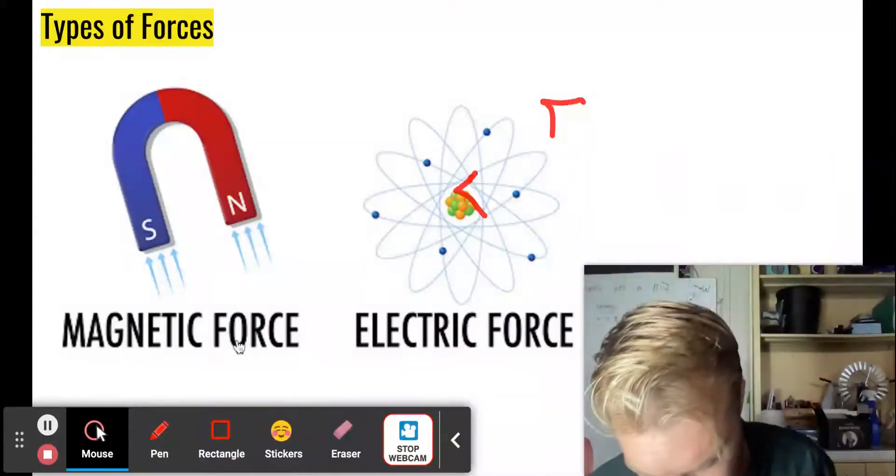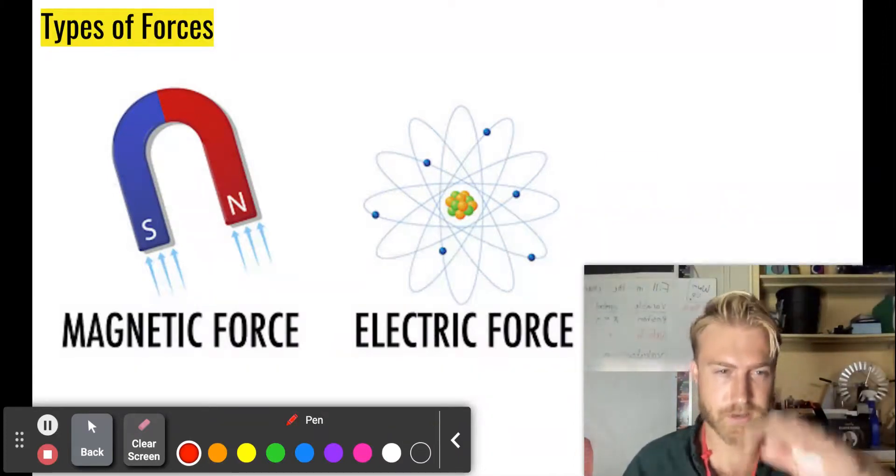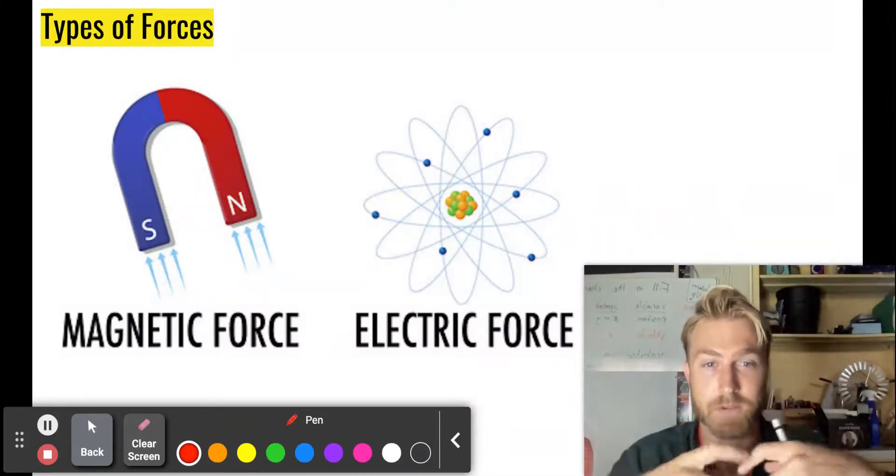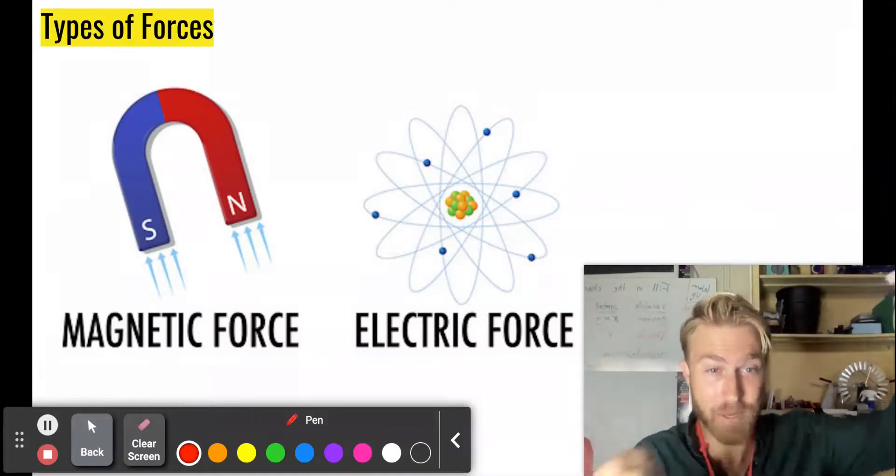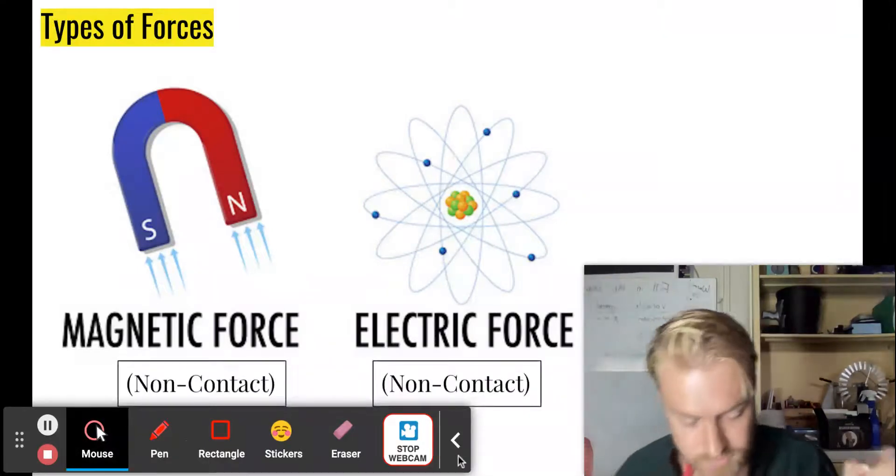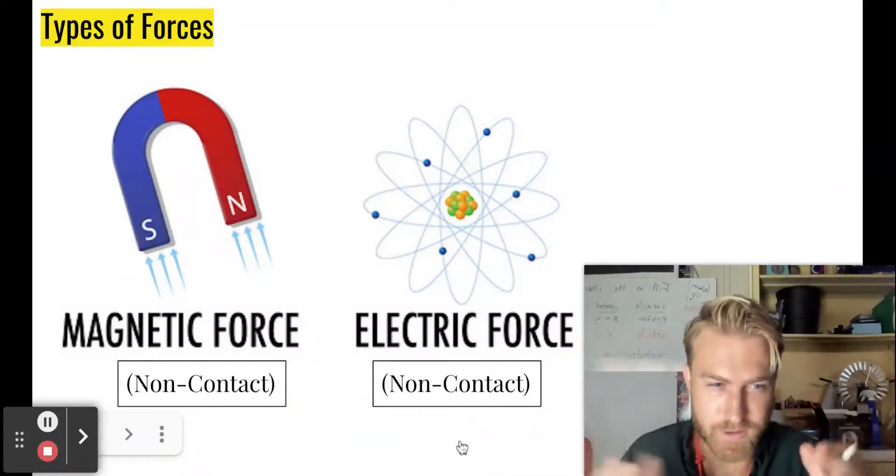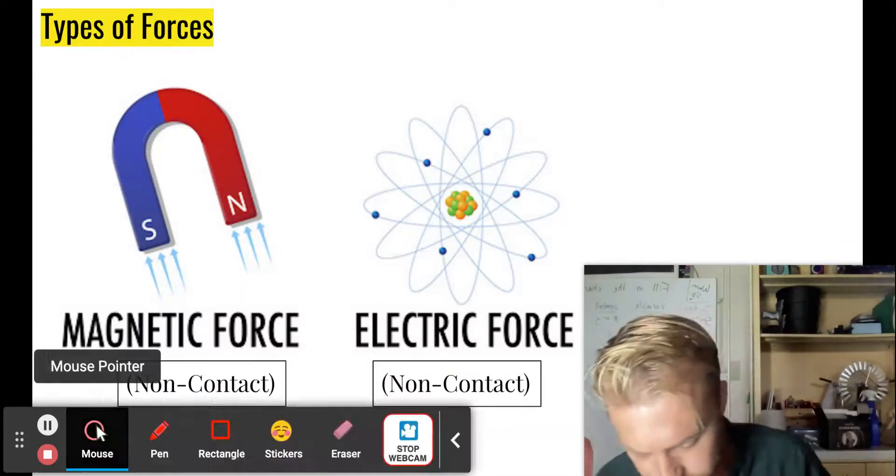All right. Move it along. We've got the magnetic force and the electric force. The north and south pole of a magnet will attract or the protons and the electrons in an atom will attract. Those are two non-contact forces because they actually don't need to be touching each other, just like gravity to feel those forces.